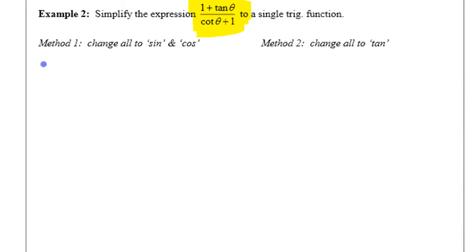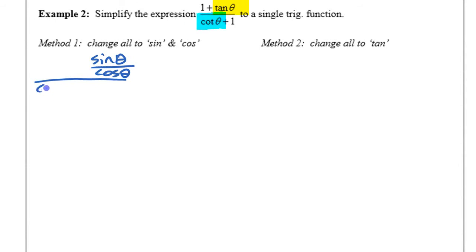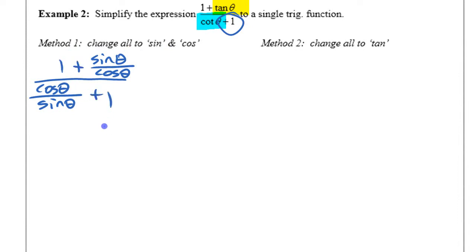To start with, I'm going to change the top part of that fraction. The tangent up there I'm going to change to sine theta over cos theta. And on the bottom, the cotangent I'm going to change to cos theta over sine theta. The two ones that are involved here, I'm going to change them so that I'll be able to add these fractions. I need to be able to combine these two things that are on top, so instead of just saying plus one, I'm going to change that one into cosine theta over cosine theta.